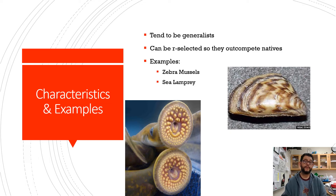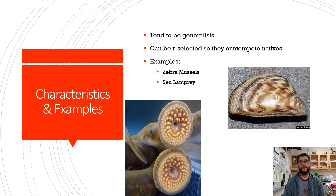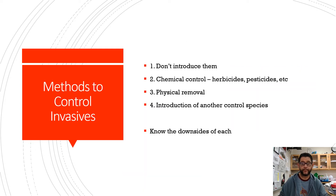Then you have sea lampreys, which are very much like salmon — they're anadromous, they live in the ocean and then breed in freshwater. These moved into freshwater once we connected the Great Lakes to the Atlantic, and they're parasitic on the other fish in those lakes.